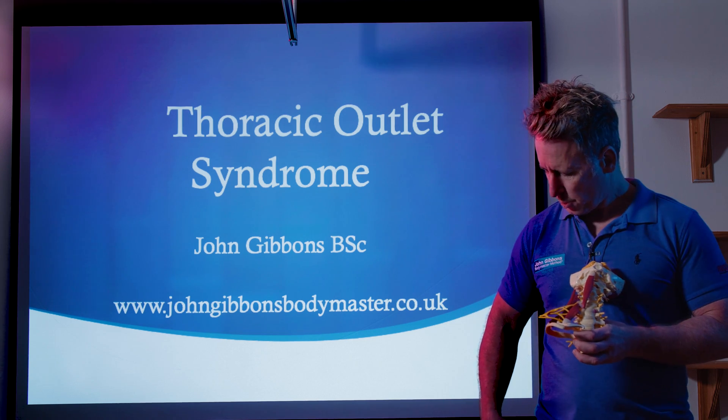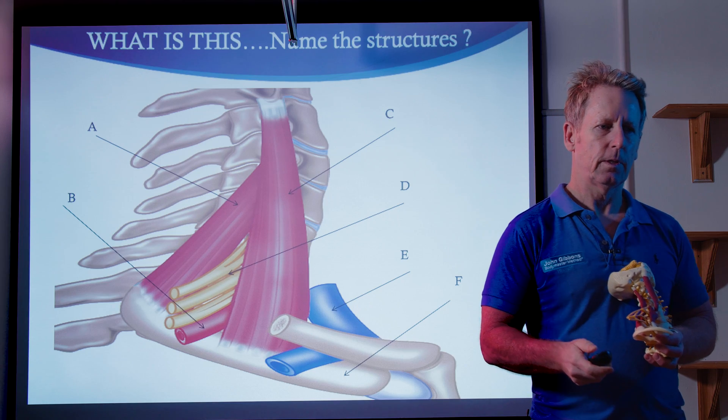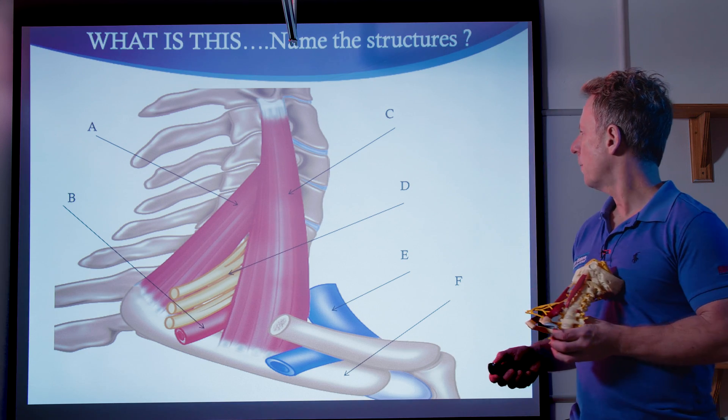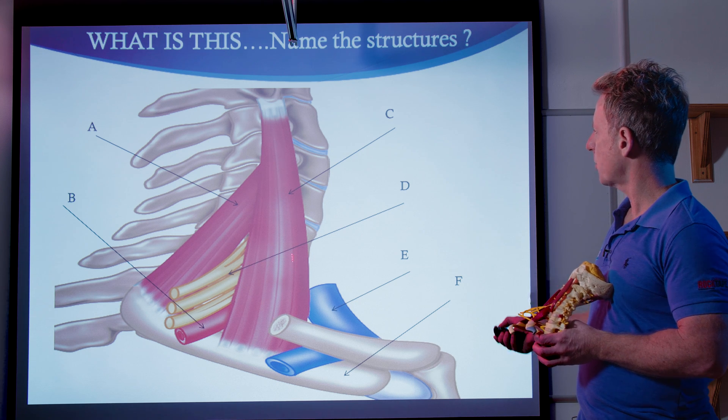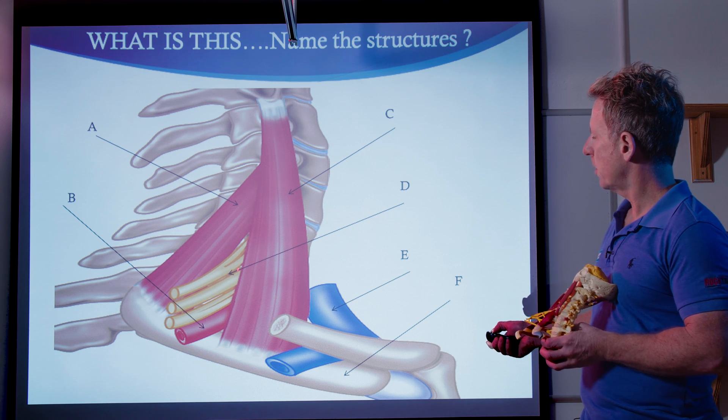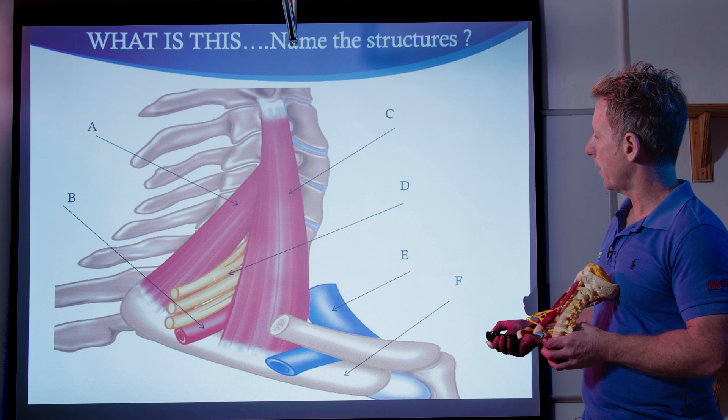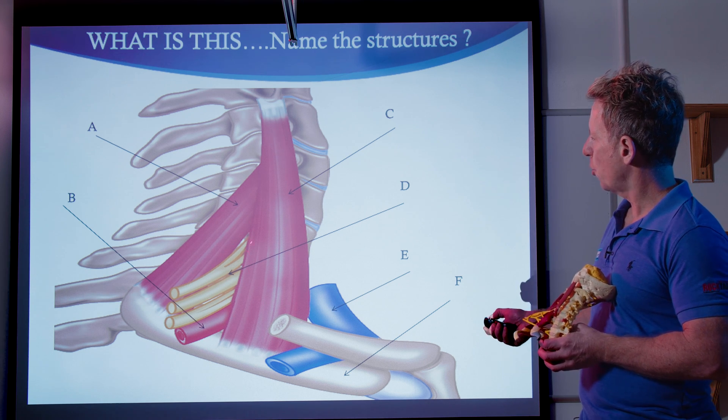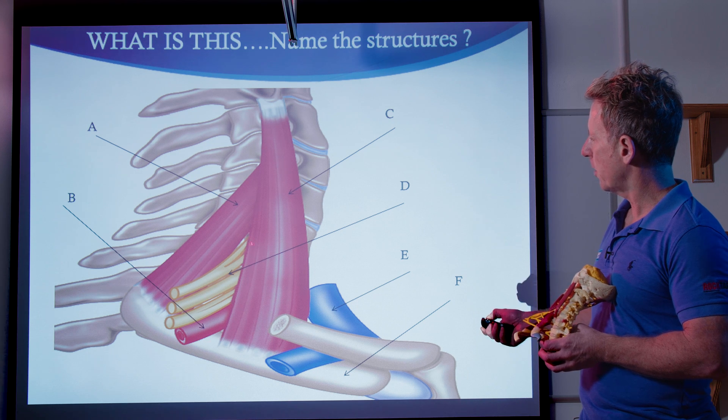So have a look at this picture anatomically. You can see that you've got the anterior fibers of the scalene, the mid fibers, then you've got the brachial plexus. So this forms a triangle between the two, it's called the interscalene triangle along here.